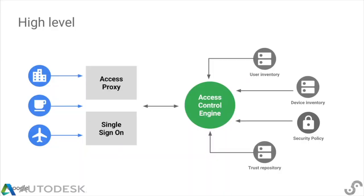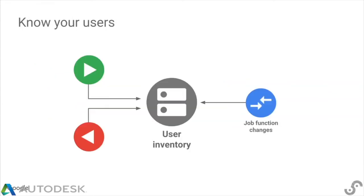This is a high-level picture showing some of the components. On the left we have lots of different application or user access modes. We have access proxies coordinated with our single sign-on process so that wherever you come from, you have to get through those. And then we have a universal access control engine that makes all the policy decisions based on device inventory, user inventory, and other things like that.